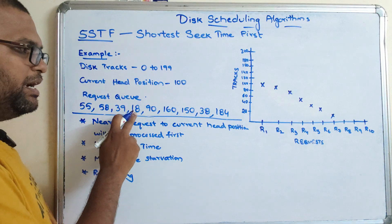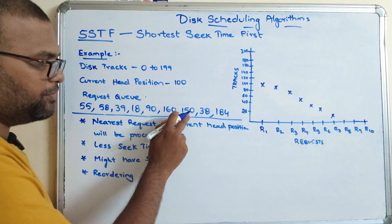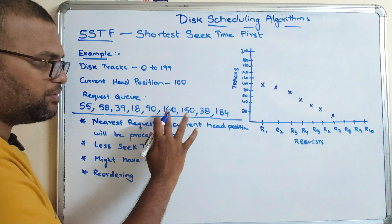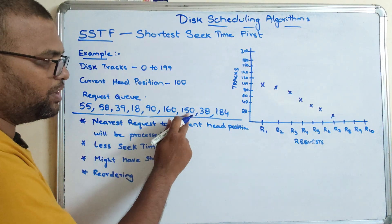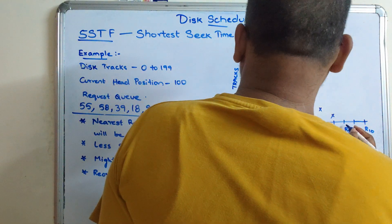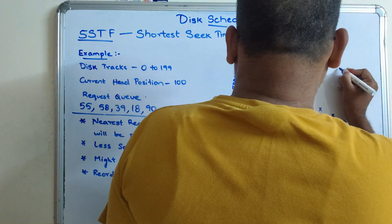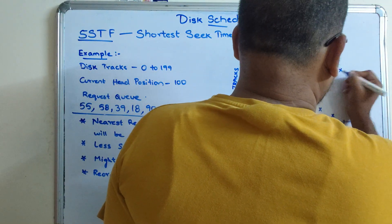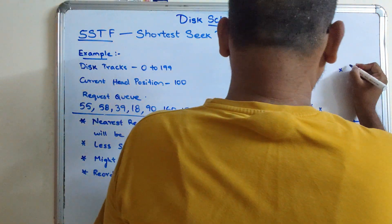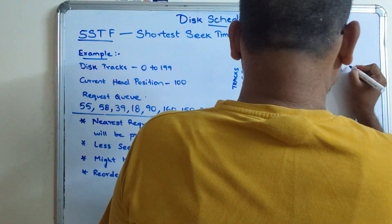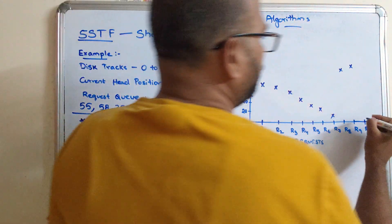From 18, the remaining requests are 150, 160, and 184. The nearest is 150, so R8 moves to 150. Next is 160, and finally 184.